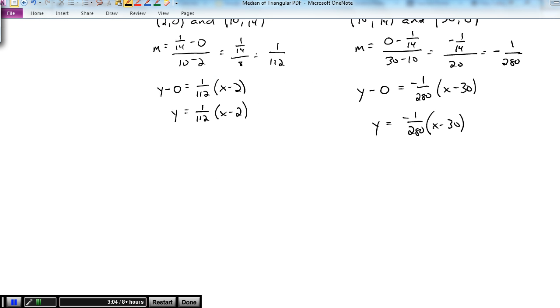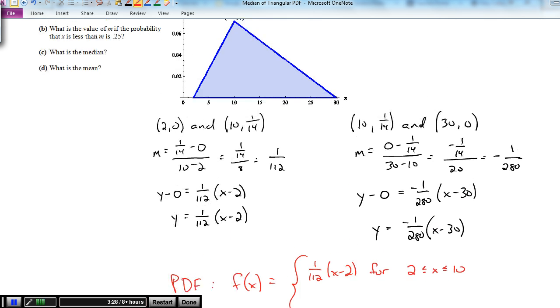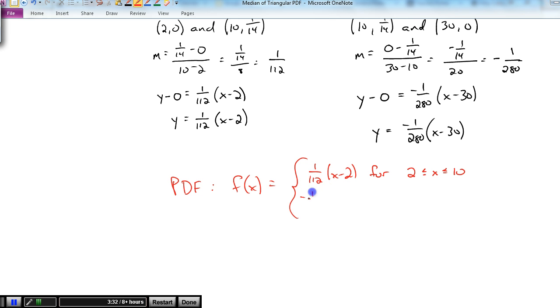So now we have the two equations and we're going to combine them into the PDF in piecewise form. f of x equals 1 over 112 times x minus 2 for 2 is less than or equal to x is less than or equal to 10. And for this one, negative 1 over 280 times x minus 30 for 10 is less than x is less than or equal to 30. That's our PDF. I suppose there's two more parts: f of x equals 0 from negative infinity to 2, and f of x equals 0 from 30 to infinity. But those are kind of negligible parts.